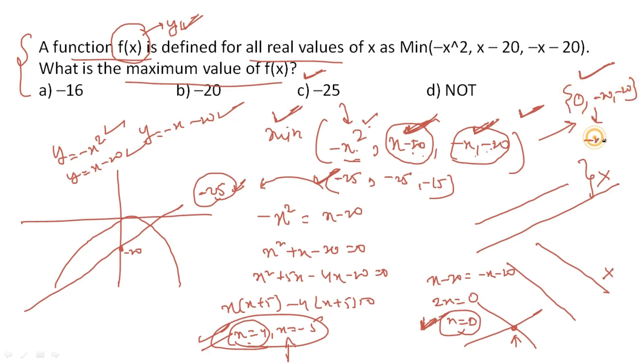The minimum value here is minus 20. We have one minimum value at minus 20 and one at minus 25. The function is asking for maximum value out of the entire function. Between minus 25 and minus 20, which is maximum? We found minimum values within each bracket, but the question asks for maximum among these two. The maximum is minus 20.